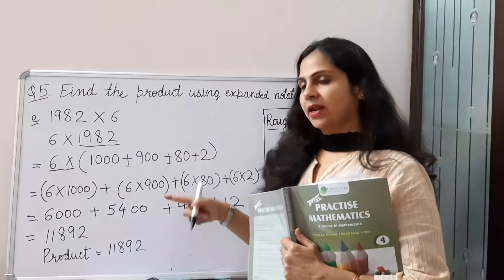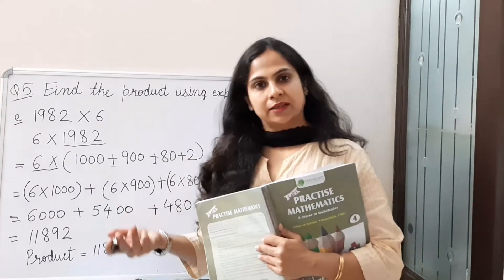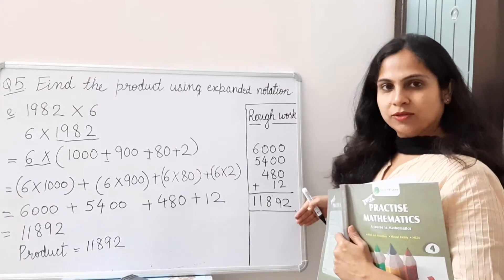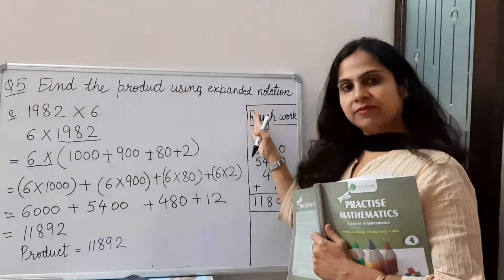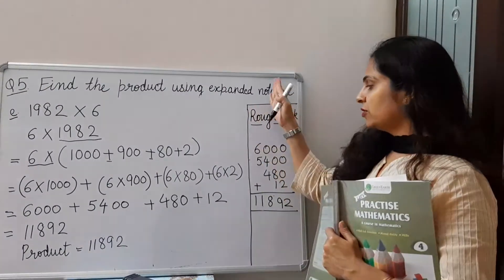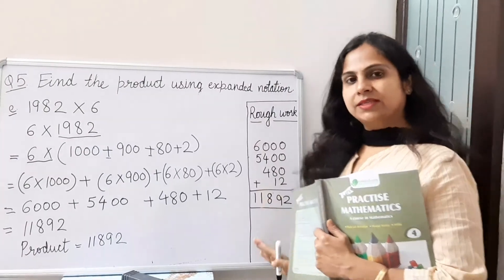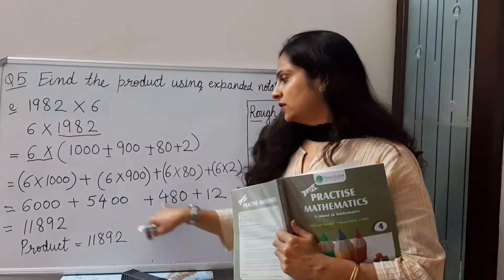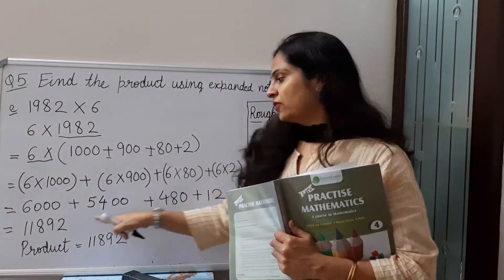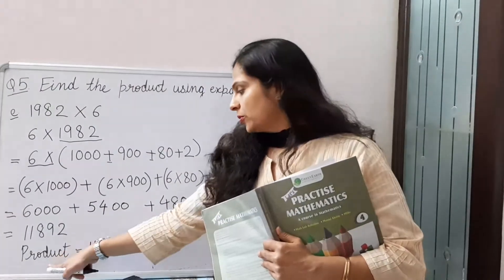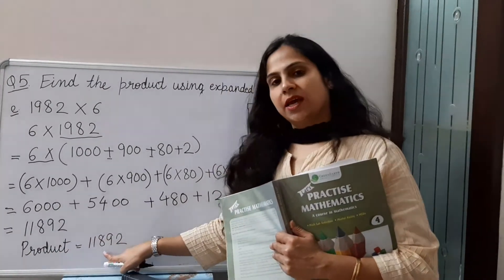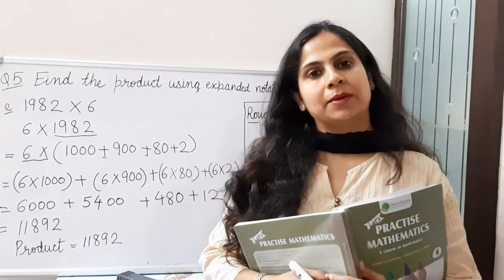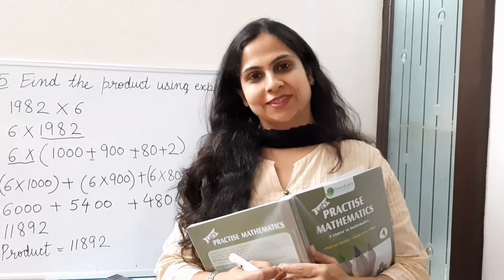Now we will add these four numbers. You can add them horizontally or vertically — draw a line on the right side of your register and do all the working on that portion. Our product is 11,892. Remaining parts of question 4 and question 5 are your homework.